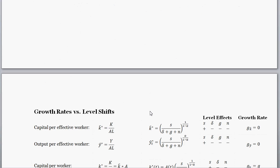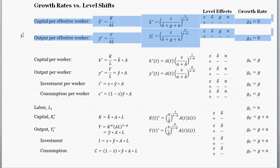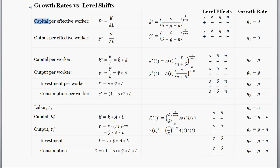Let's also look at our equations for output and capital per effective worker. Remember, these are in the steady state with this model so they don't grow at any rate, but they do have level effects. If depreciation is higher, we expect capital per effective worker to be lower — which we just saw in the diagram. And output per effective worker is just a function of capital per effective worker, so we expect the same change: output per effective worker is shifted down to a lower level.